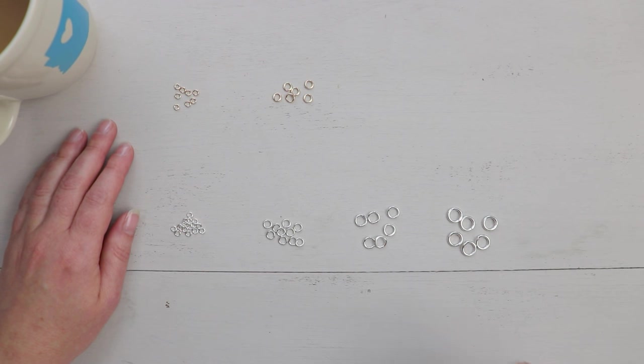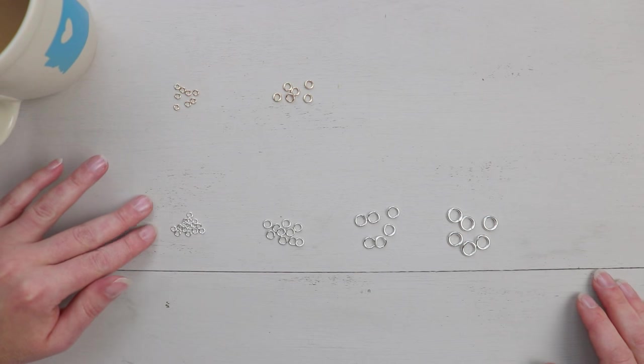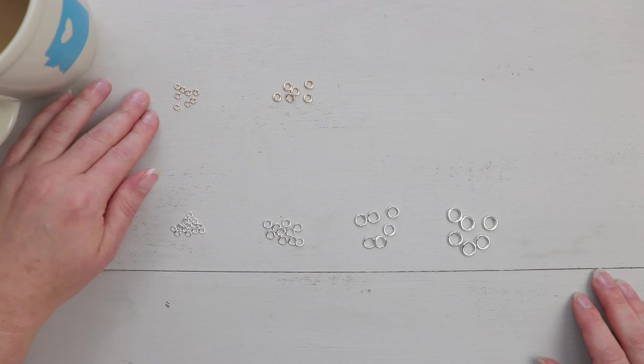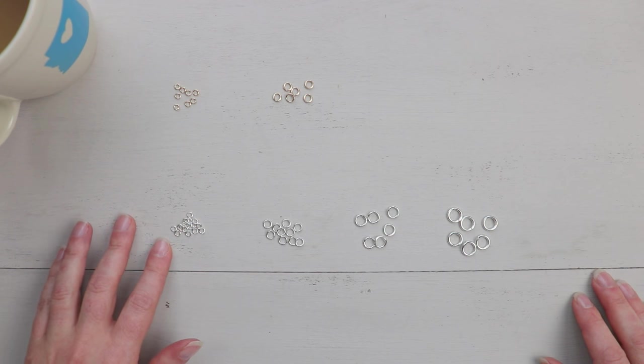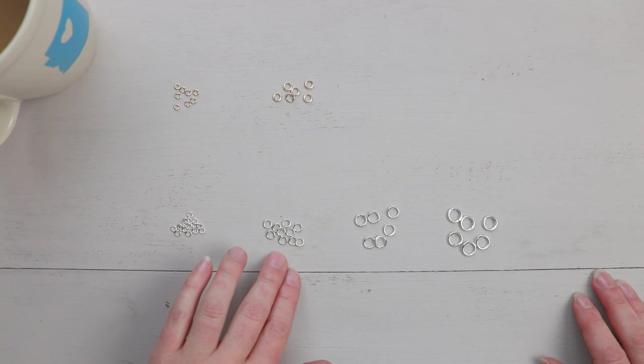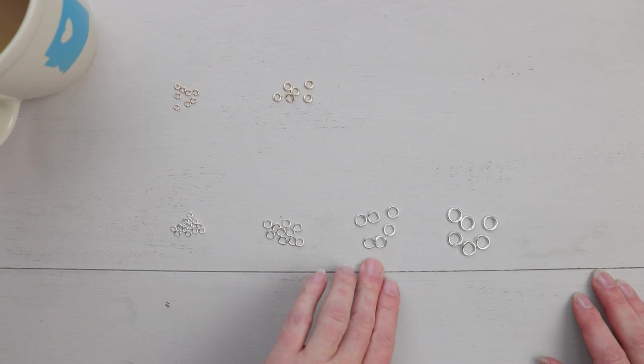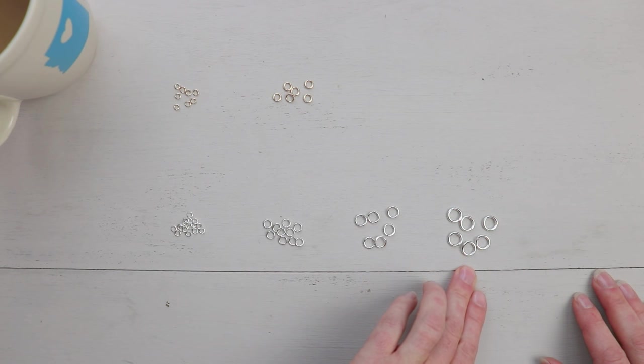Our hard snap series of jump rings is available in both sterling silver and gold filled varieties. The jump rings come in a range of sizes: 4 and 6 millimeter in both metals, and also 8 and 10 millimeter in sterling.